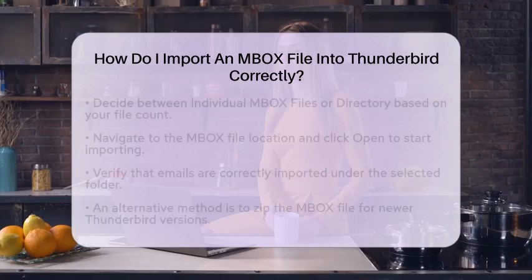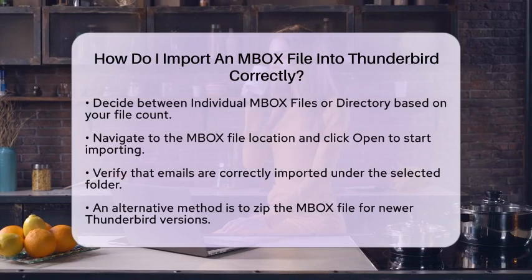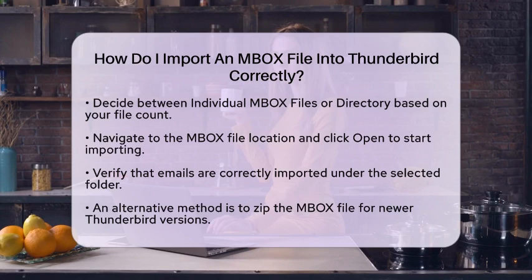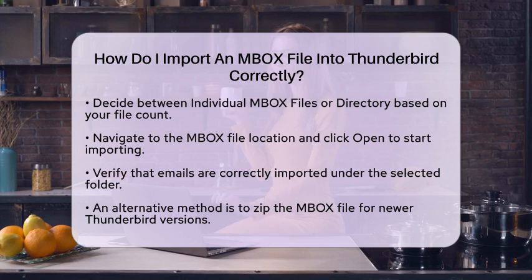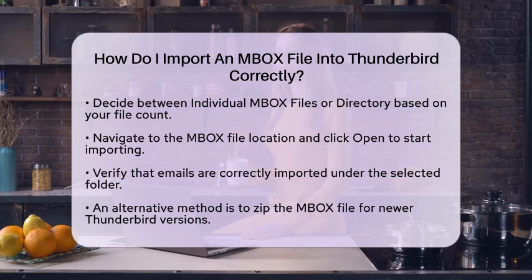You will see options for individual mbox files or directory. If you have just one file, choose individual mbox files. If you have multiple files in a folder, select directory. Navigate to the location of your mbox file or files and select them. Click Open to start the import process. Once the import is complete, take a moment to verify that your emails are correctly imported under the selected folder. You can sort and manage your emails as you like.